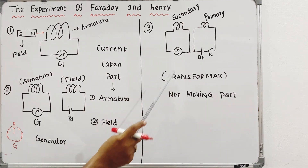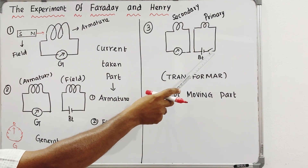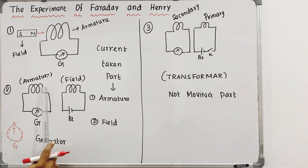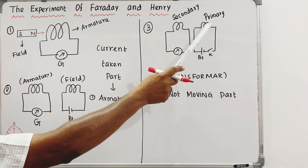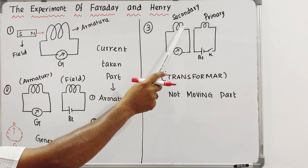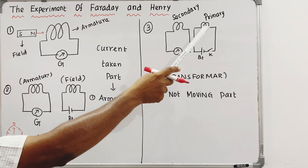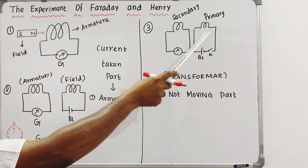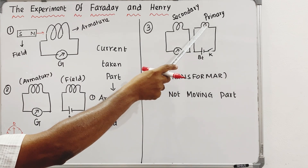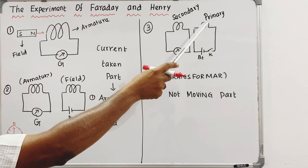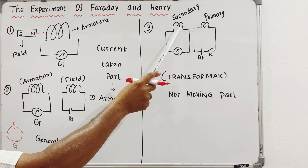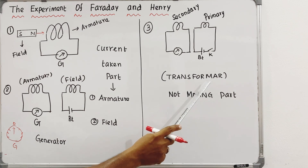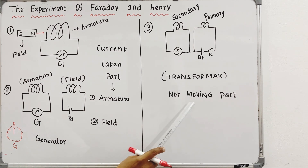If you have a battery and you switch it, you can vary the current. So the magnetic flux is coming in — if you change the magnetic flux, you induce a current. That's what my principle is: the transformer.